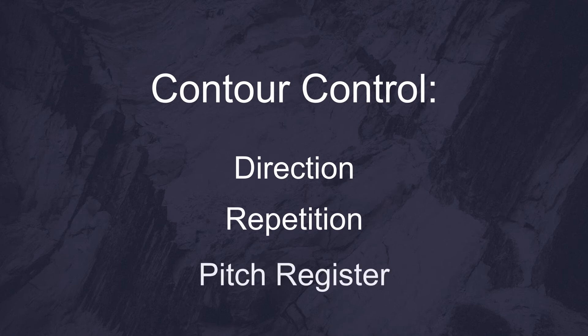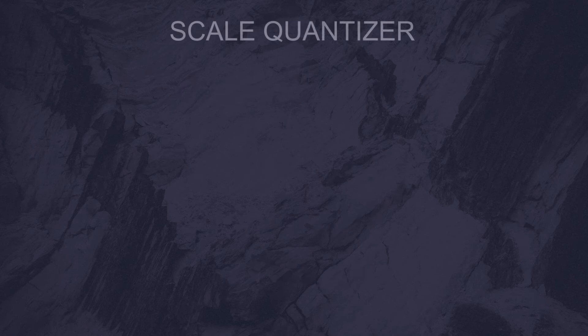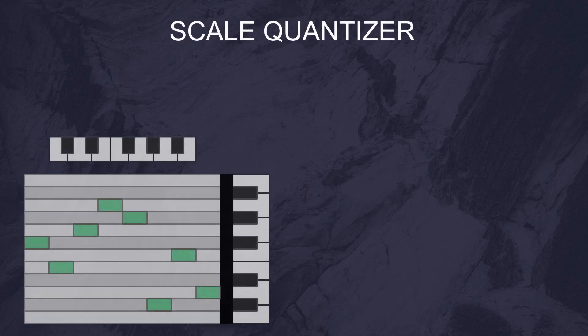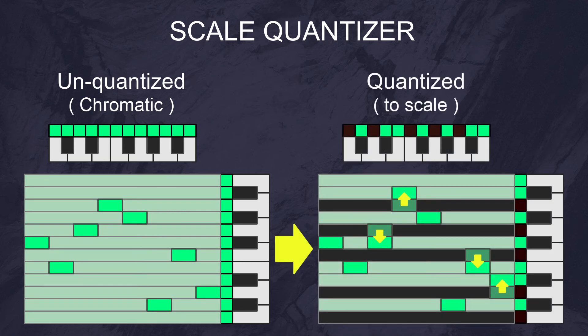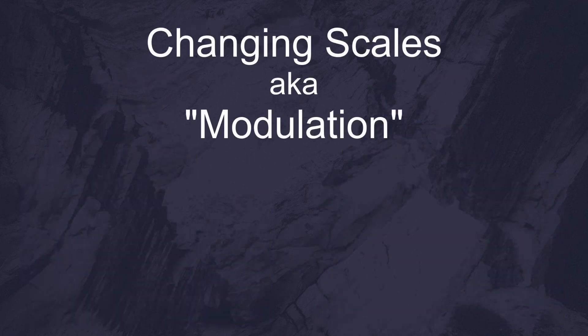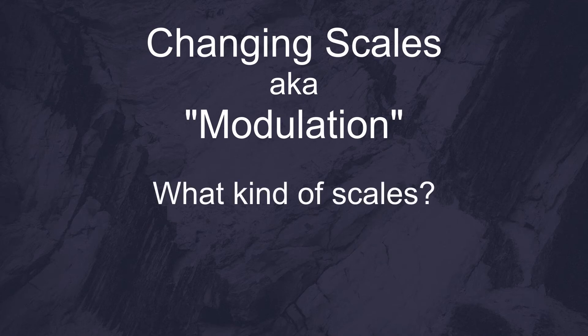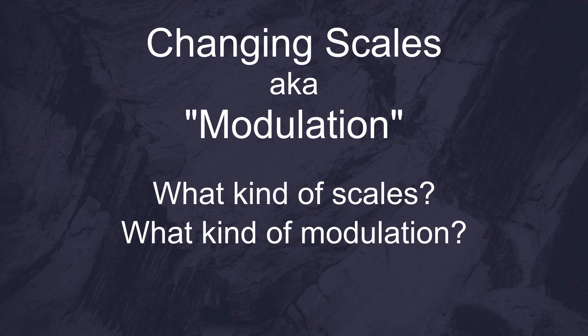With all of these parameters combined, we have substantial control over the direction, repetition, and register of the melody. The next step is to put the melodic line through a scale quantizer. A scale quantizer takes our melodic contour and aligns all of the notes with a scale that we've pre-selected. This gets everything playing in the same key. It's also important that we can change scales during a piece of music. So there are three things that we need to figure out: What sort of scales do we want? What kind of scale modulation do we want? And when do we want to modulate the scales?